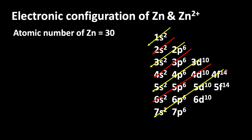The maximum number of electrons in the s orbital is 2, p orbital is 6, d orbital is 10, and f orbital is 14. Using this, let us write the electronic configuration of zinc: 1s2, 2s2, 2p6.